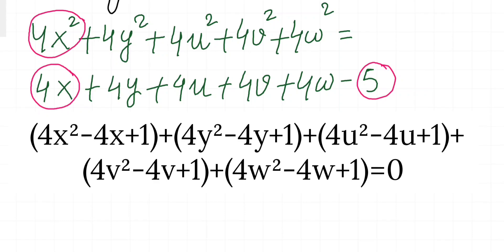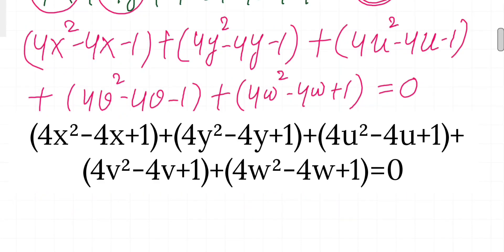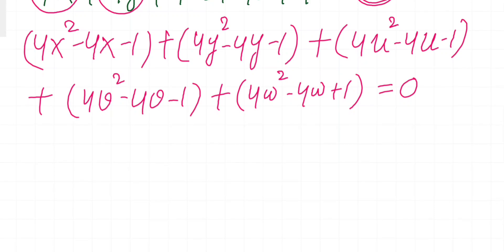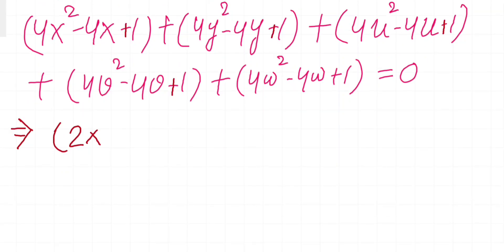Then I am going to have 4y² - 4y + 1, and similarly for all variables. Finally, this will equal 0. Now let's complete the square. Completing the formula, we are going to have something like this.